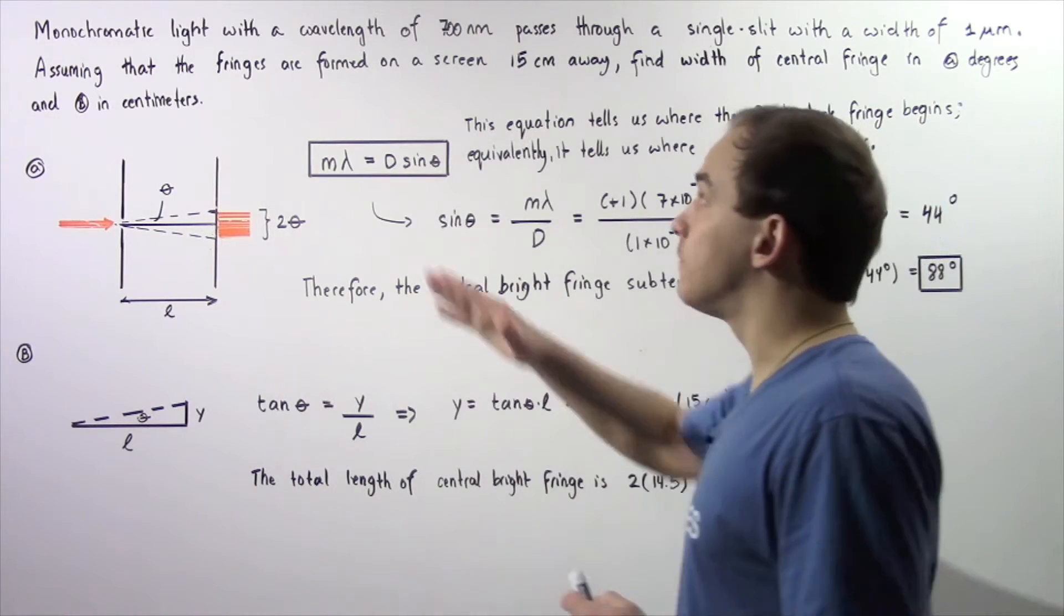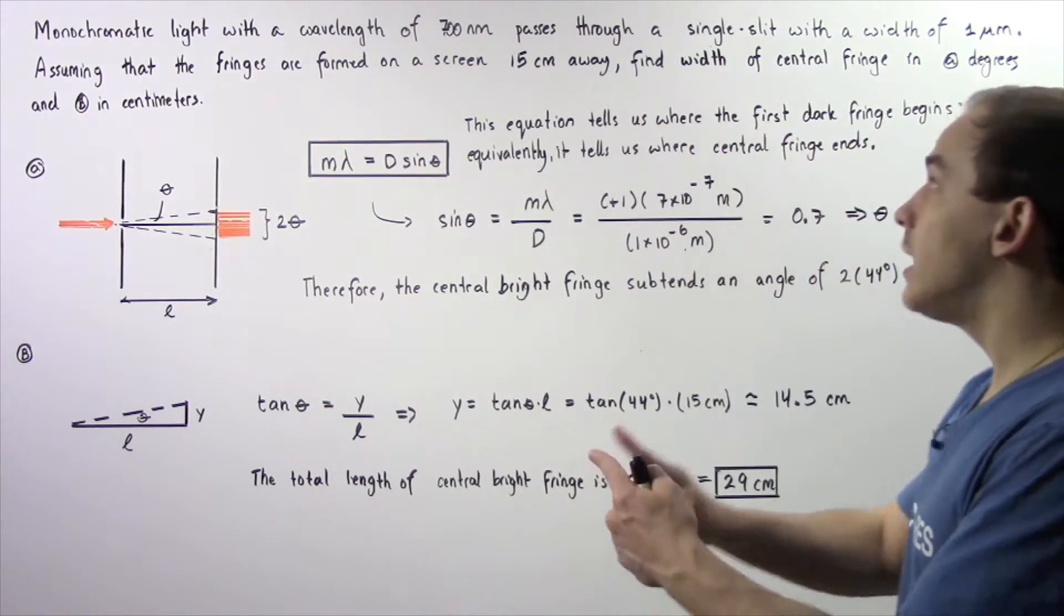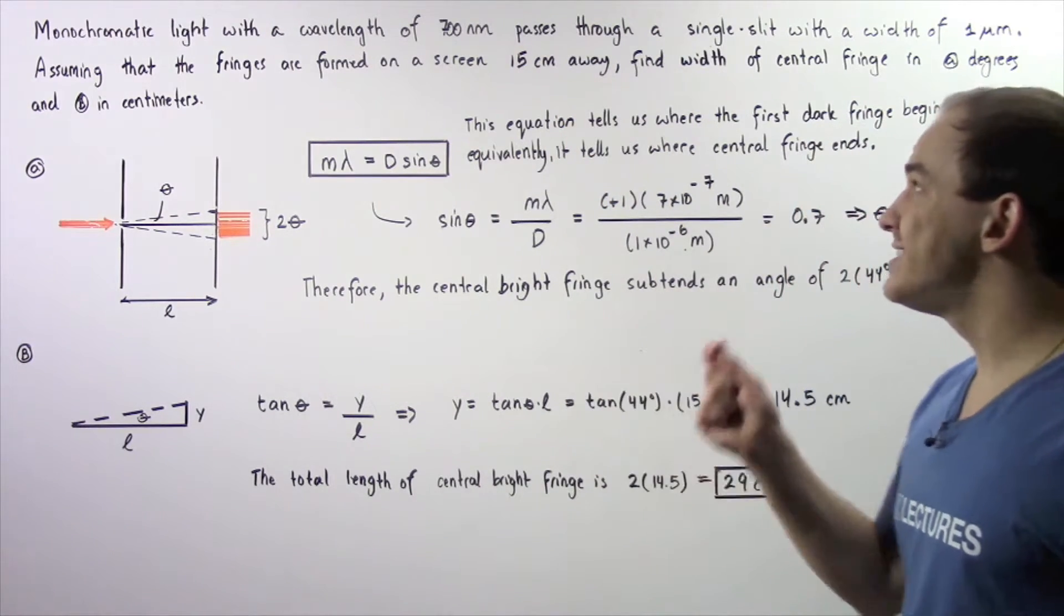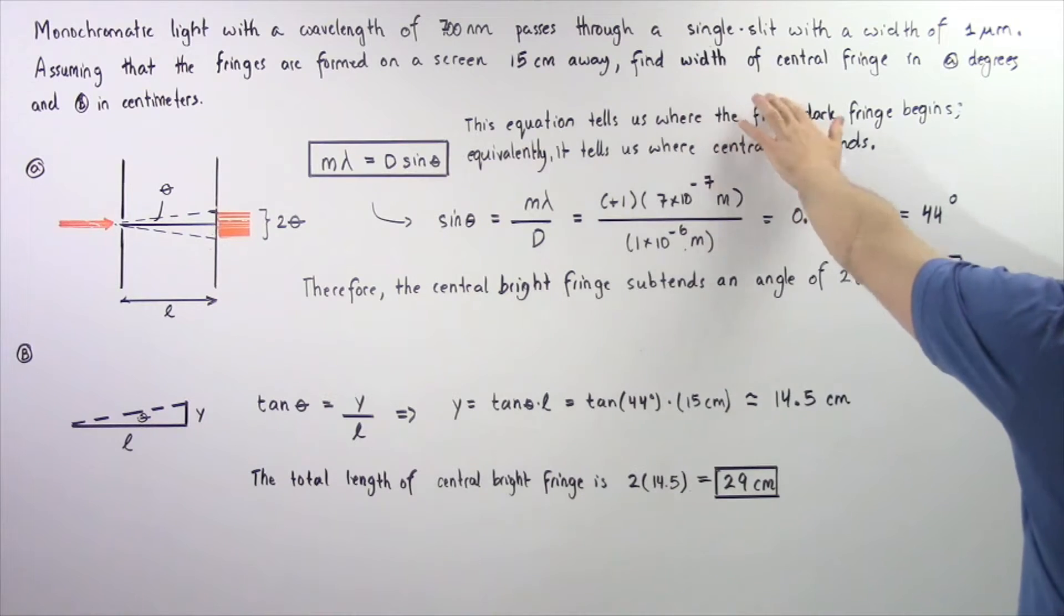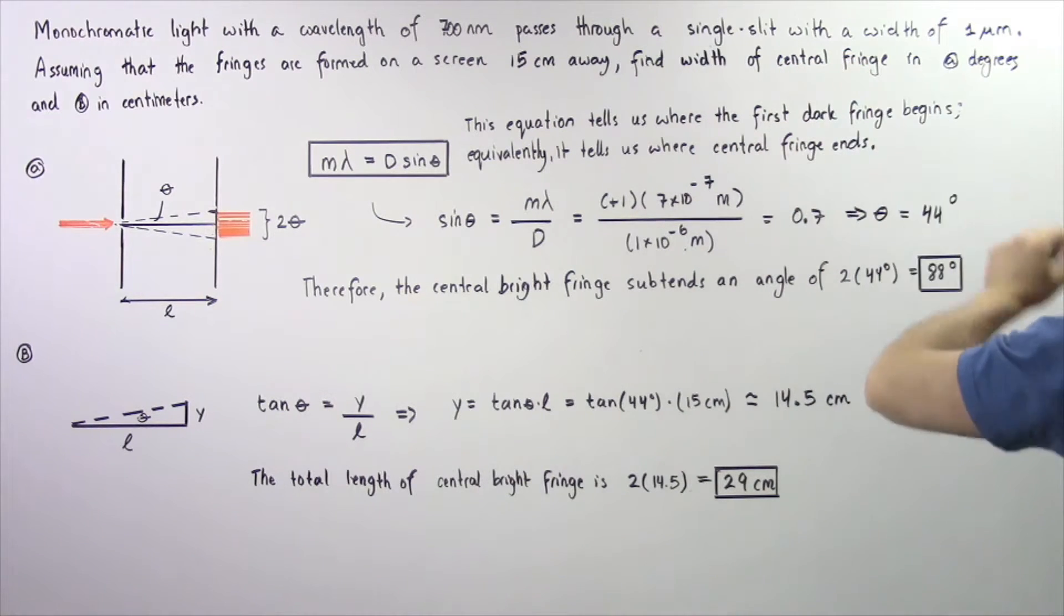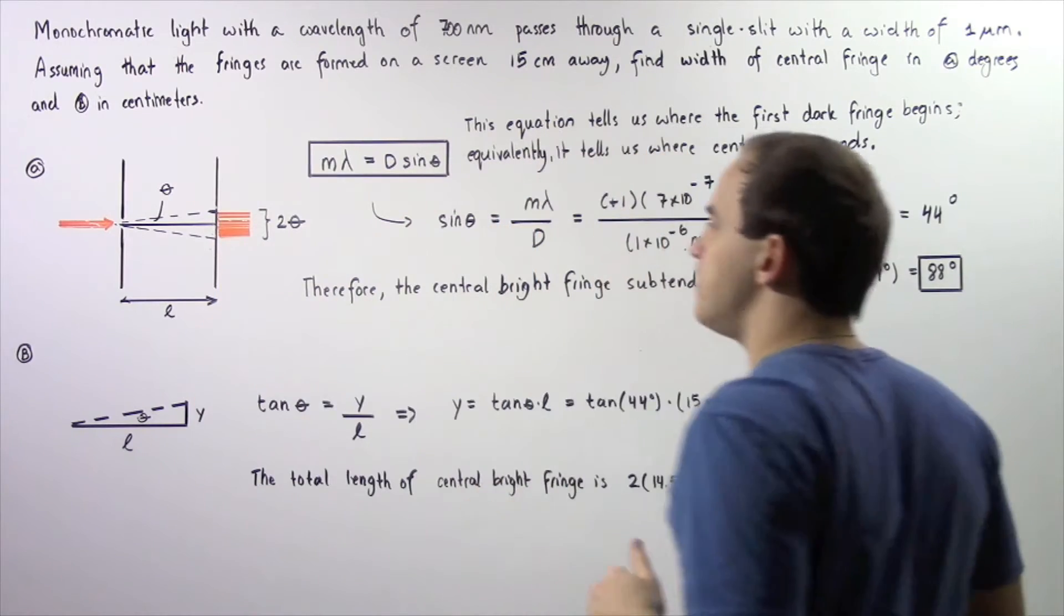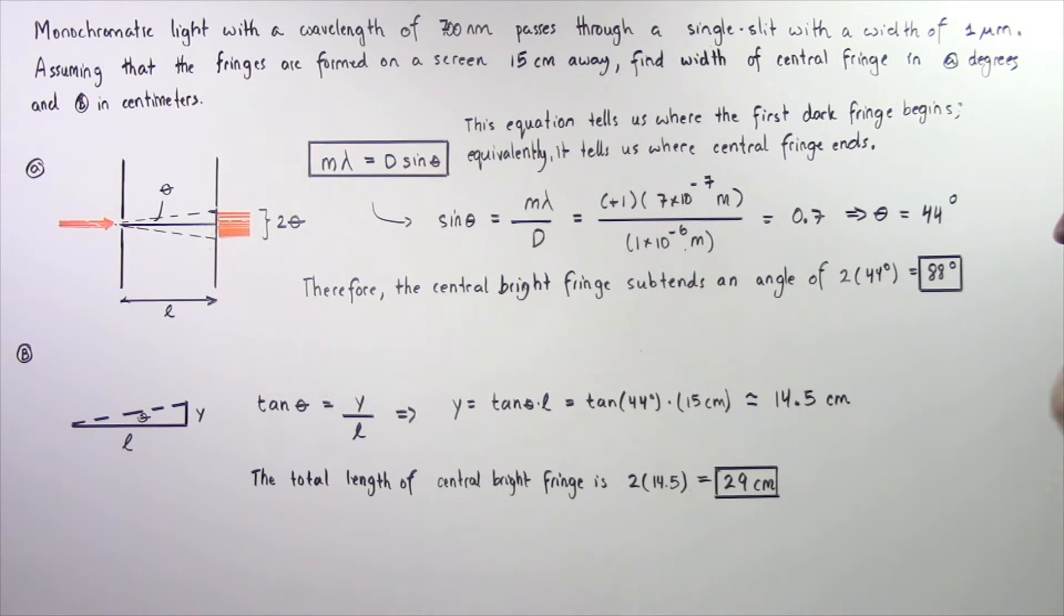Assuming that the fringes are formed on the screen a distance of 15 centimeters away from the single slit, find the width of the central bright fringe in A degrees and B in centimeters. Let's begin with part A.